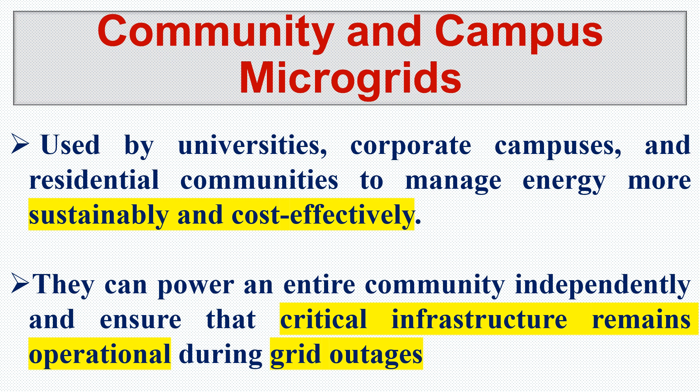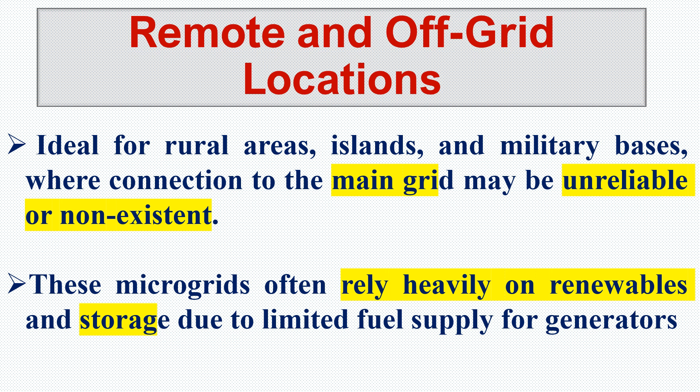Universities can also earn money by exporting power to the grid. They can power an entire community independently and ensure that critical infrastructure remains in operation during grid outages. During blackouts, they can supply their own load using their own microgrid power generation, making them independent from the grid during outage times.